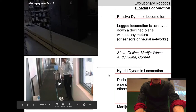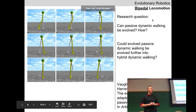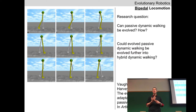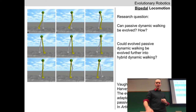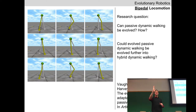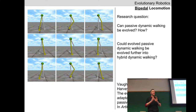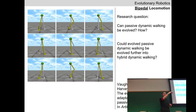We're looking at an evolutionary robotics experiment in simulation: can we evolve a purely mechanical device — no sensors, no motors — that walks down a declined plane? And then, once we've evolved that, can we continue evolving this population to gradually turn these passive walkers into hybrid walkers? Hybrid walkers are still pretty energy efficient and have increased robustness — they can walk in a greater number of environments, whereas the passive dynamic walker can only walk down the declined plane.